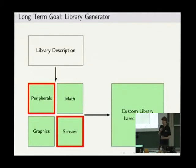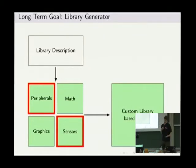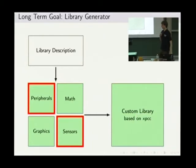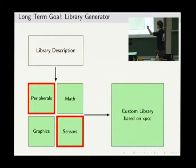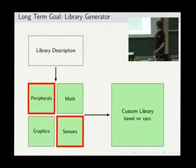For the long term, we want to reach further and generate the whole XPCC library. Right now we're just generating the peripheral drivers, but we want to make it possible to have a library description, select the drivers you want, and get a custom library — which fits embedded development quite neatly. Some companies have custom build systems and want to use XPCC with them. Since we use thousands of lines of Python template code, they can't just use our library directly. But if you generate the library once, you can use it with any custom build system or check it into version control.